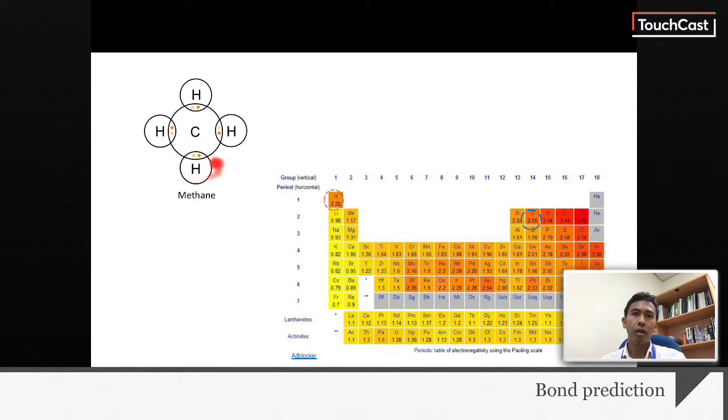However, methane is covalent, carbon and hydrogen. Both have high electronegativity, which is 2.55 and 2.20 respectively. So methane forms covalent bonds.